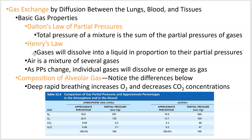Henry's law states that because of those different pressures, gases will dissolve into a liquid in proportion to their partial pressure — so they dissolve proportionally to how much of each one is present. All else being equal, if you're breathing air that's 50% oxygen, you'll get a lot more oxygen into your blood than if you're breathing air that's only 21% oxygen. That's basically how that works.